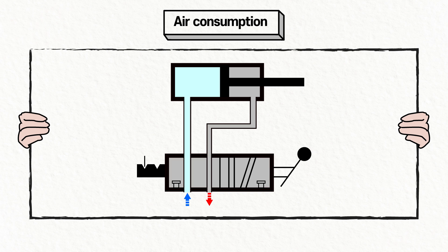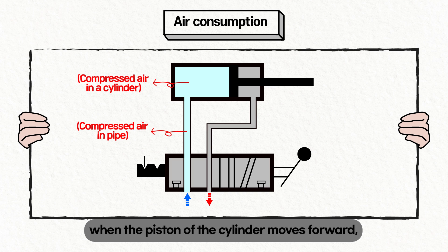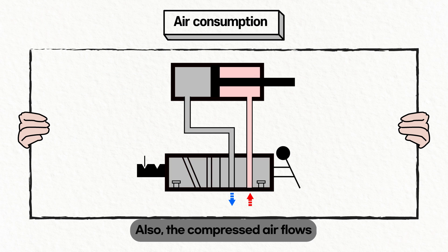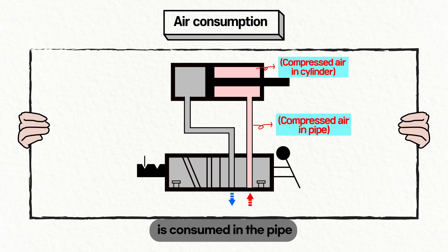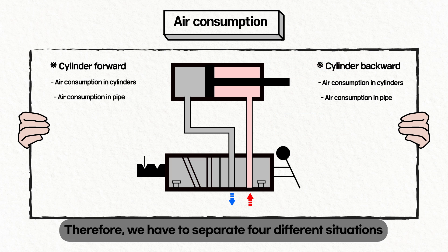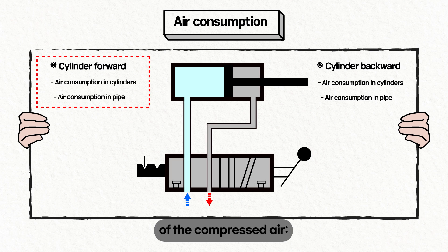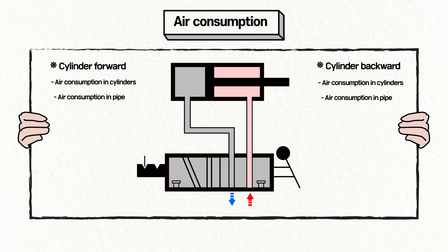Now let's look at the cylinder's air consumption by examining the reciprocating motion of a double-acting cylinder. When the piston moves forward, compressed air flows into the pipe and is consumed both in the pipe connected to the cylinder and inside the cylinder. When the piston moves backward, compressed air is similarly consumed in the pipe and inside the cylinder. Therefore, we must consider four separate situations: air consumption in the cylinder and pipe when moving forward, and when moving backward.